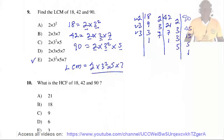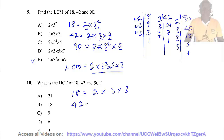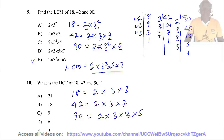Question 10: What is the HCF of 18, 42, and 90? Using the prime factors already found: 18 = 2 × 3², 42 = 2 × 3 × 7, 90 = 2 × 3² × 5. The factors common to all three are 2 and 3, so the HCF equals 2 × 3 = 6. The answer is D.